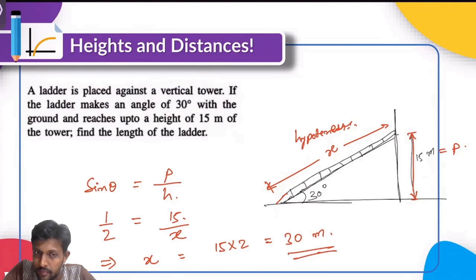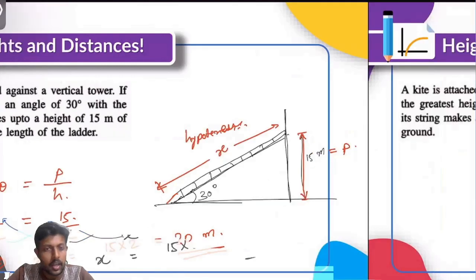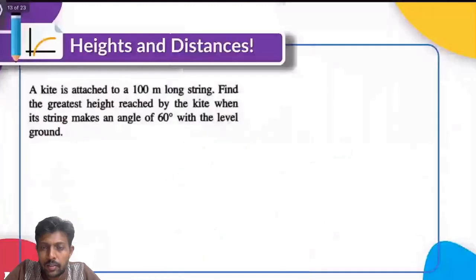I just think I did 15 into 2. I'll tell you. So x will go and multiply with 1. 2 will go and multiply with 15. So 1 into x is equal to 2 into 15. Yes sir. Here's one more question. Solve this one out.